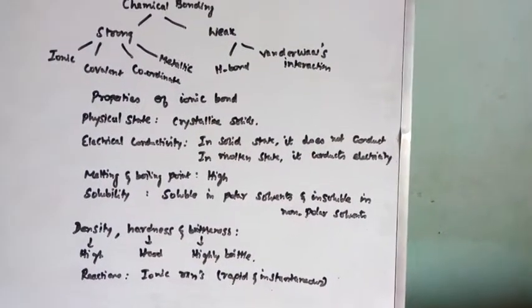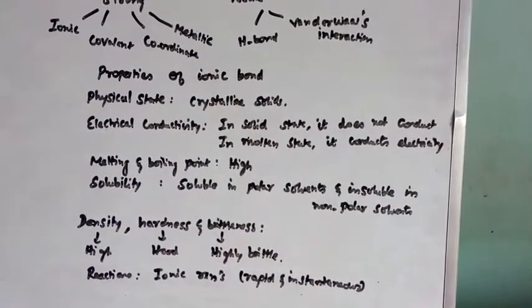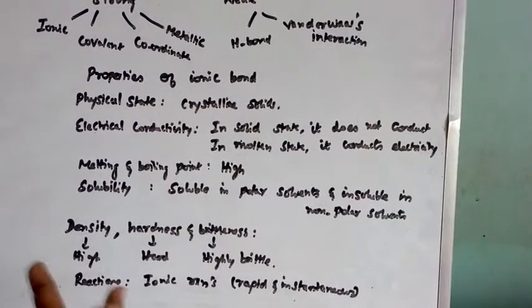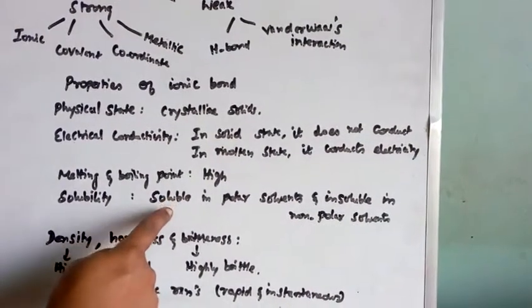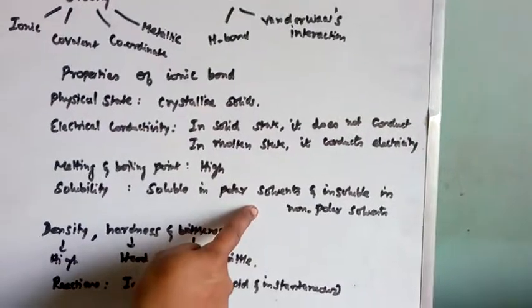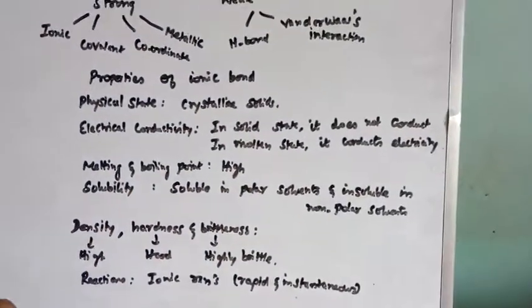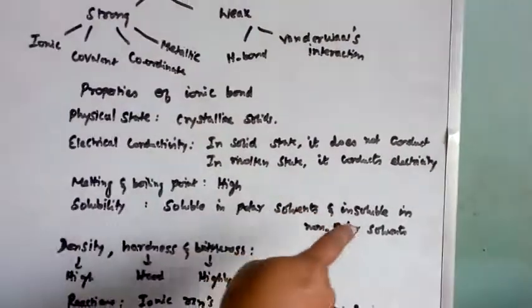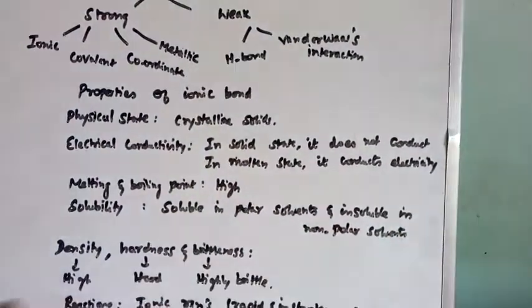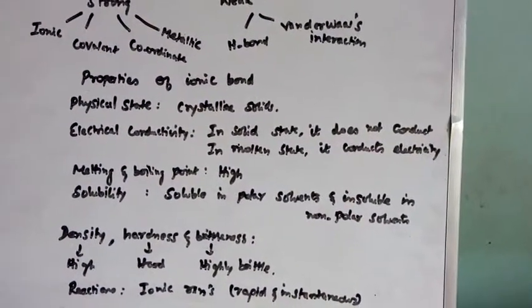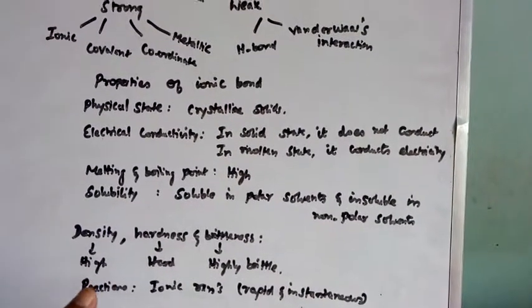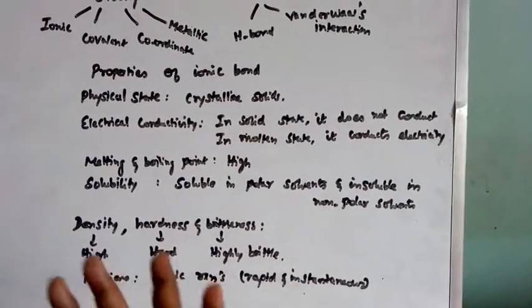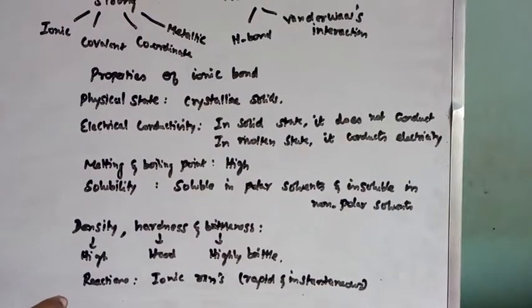Solubility. Generally, ionic compounds are soluble in polar solvents. For polar solvents, best example is water. Whereas, it is insoluble in non-polar solvents. For non-polar solvents, we can give so many examples. Even in your textbook, benzene, carbon tetrachloride.